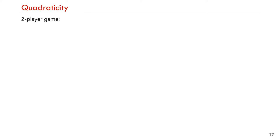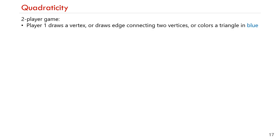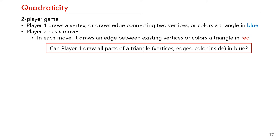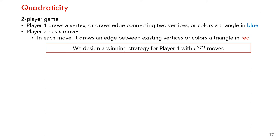The two-player game proceeds in rounds. In each round, player 1 (the tester) can either draw a vertex, draw an edge connecting two vertices, or color the inside of a triangle in blue. Player 2 (the adversary) has t moves per round: it can draw an edge between existing vertices or color the inside of a triangle in red. Once something is colored red, it cannot be drawn over in blue. The question is whether player 1 can draw all parts of one triangle — vertices, edges, and inside — in blue. We answer this in the positive by designing a winning strategy for player 1 with t^O(t) moves, which is then converted into our online erasure-resilient quadraticity tester.